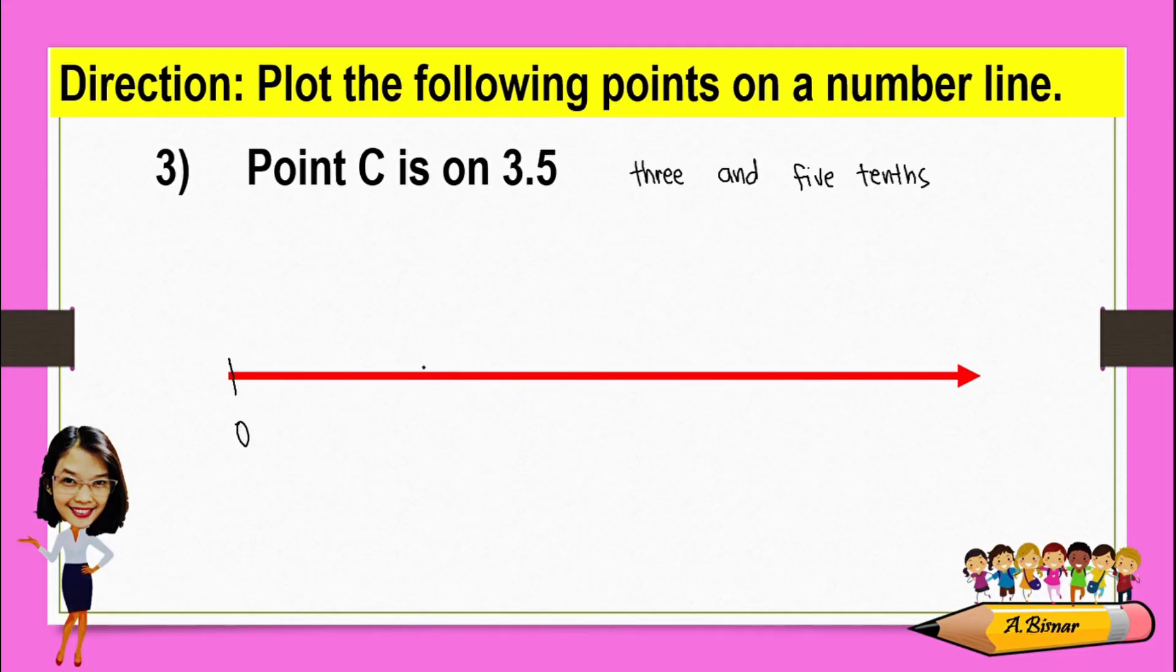This means that 3 and 5 tenths is between 3 and 4. So we have 0, 1, 2, 3, and 4. Since this is between 3 and 4, we will divide this into 10 equal parts.